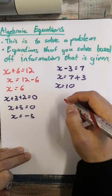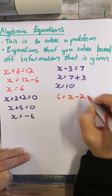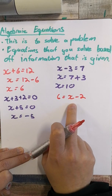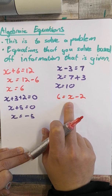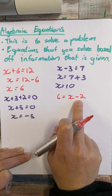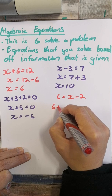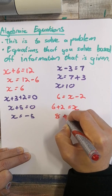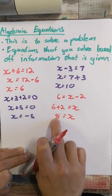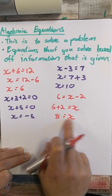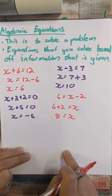6 equals x minus 2. x is on the other side — it doesn't matter which side x is, as long as I'm solving for it. There's just subtraction here, no like terms. I take the 2 over, so I have 6 plus 2 equals x, therefore 8 equals x. And x equals 8 — same thing.